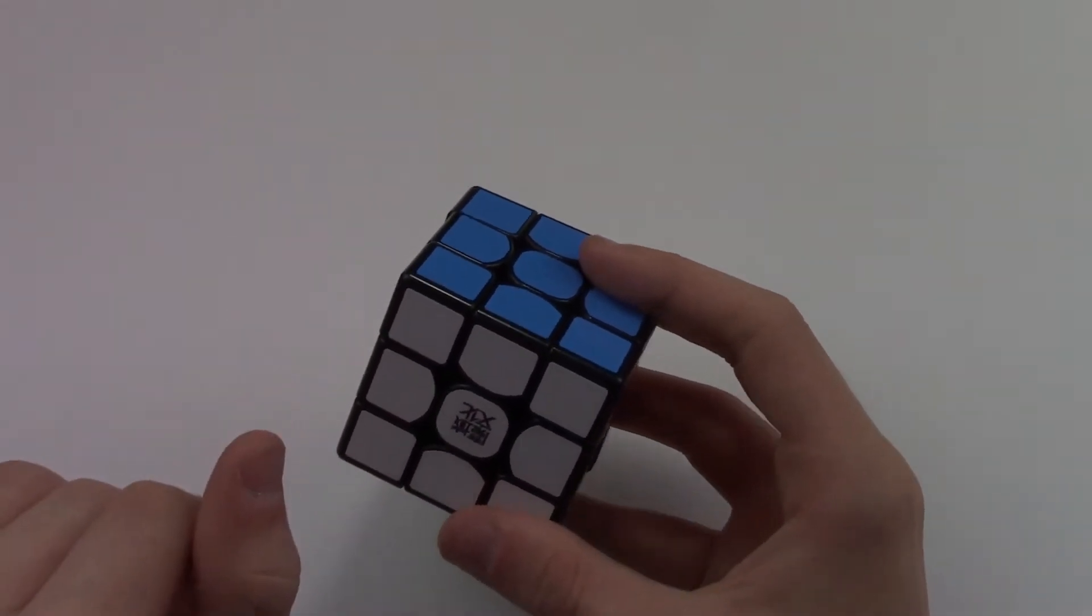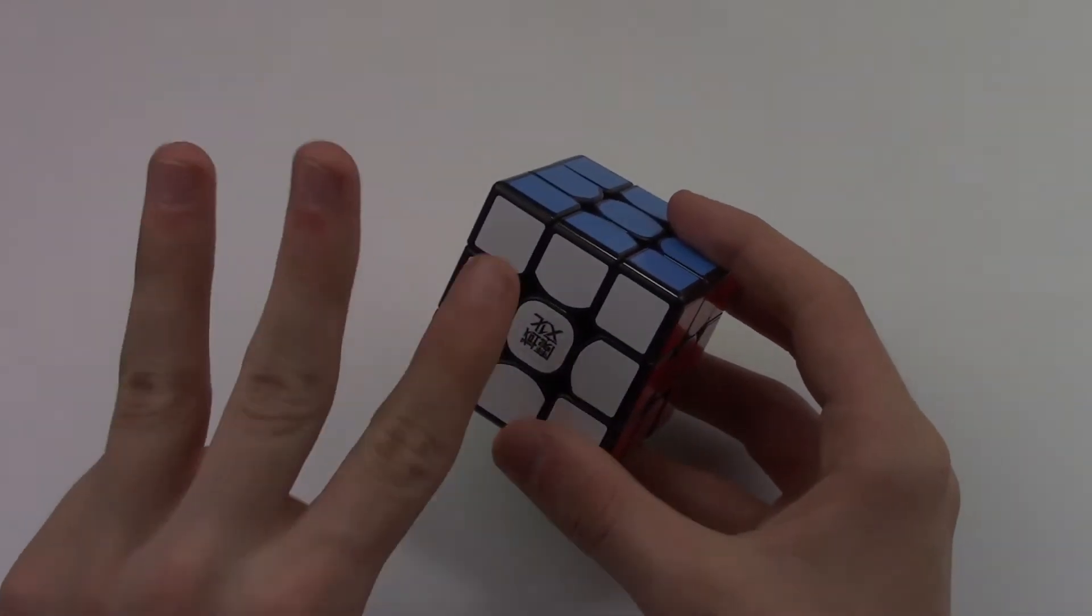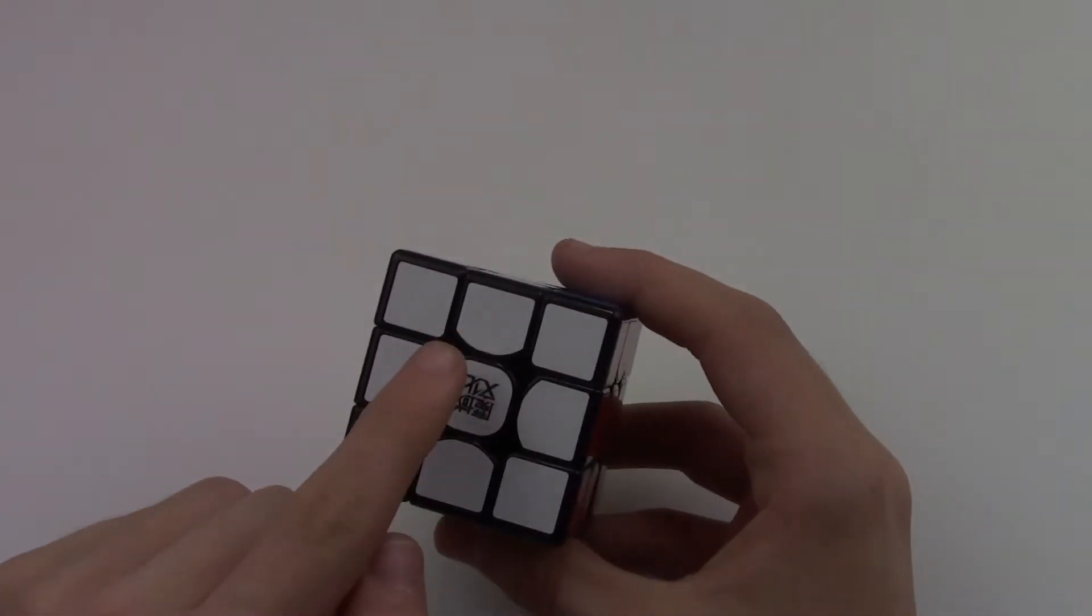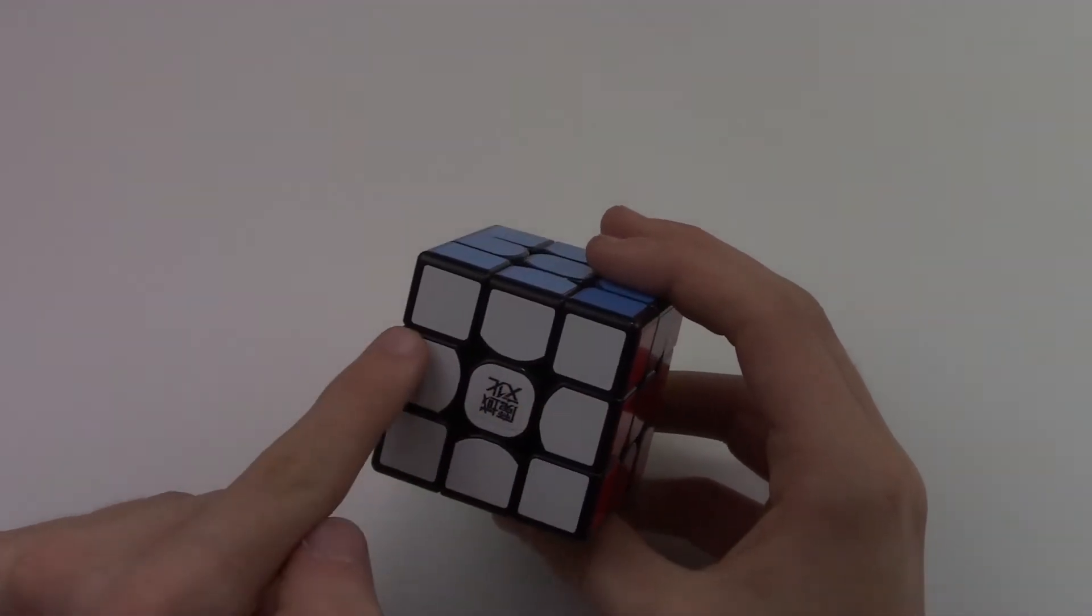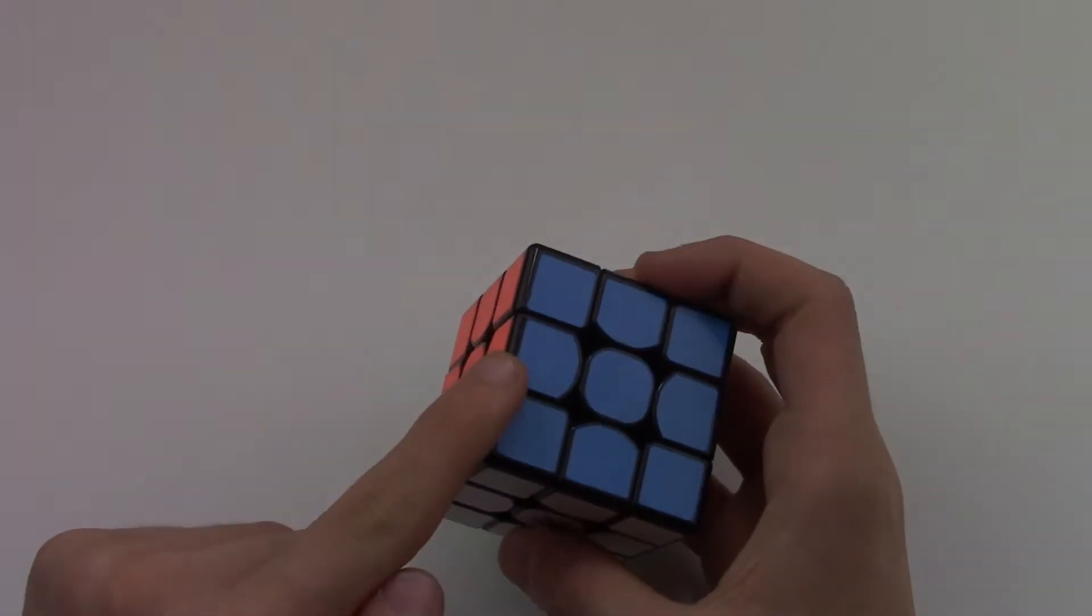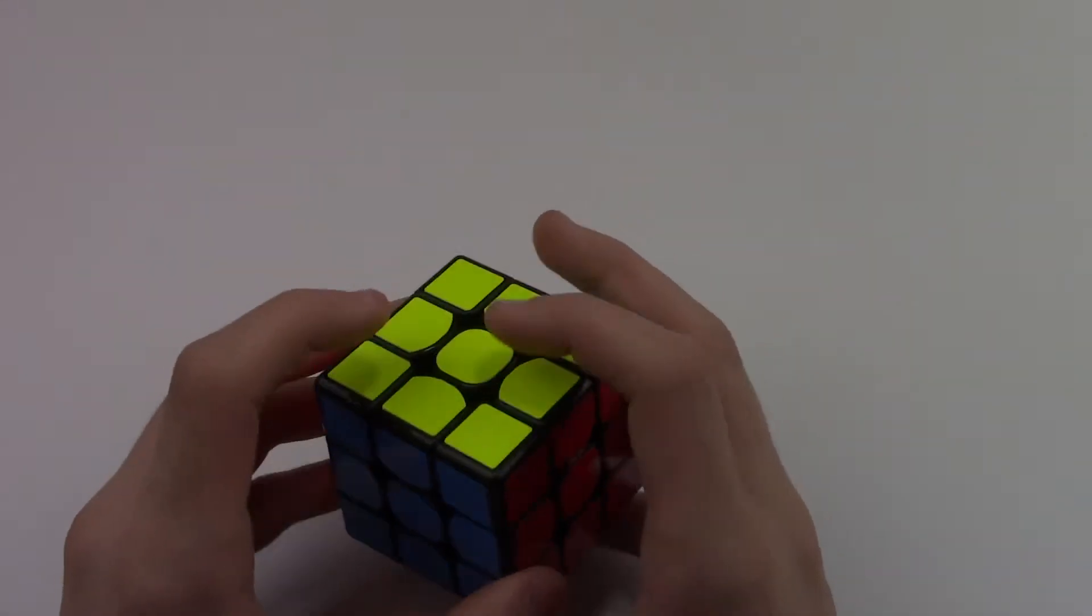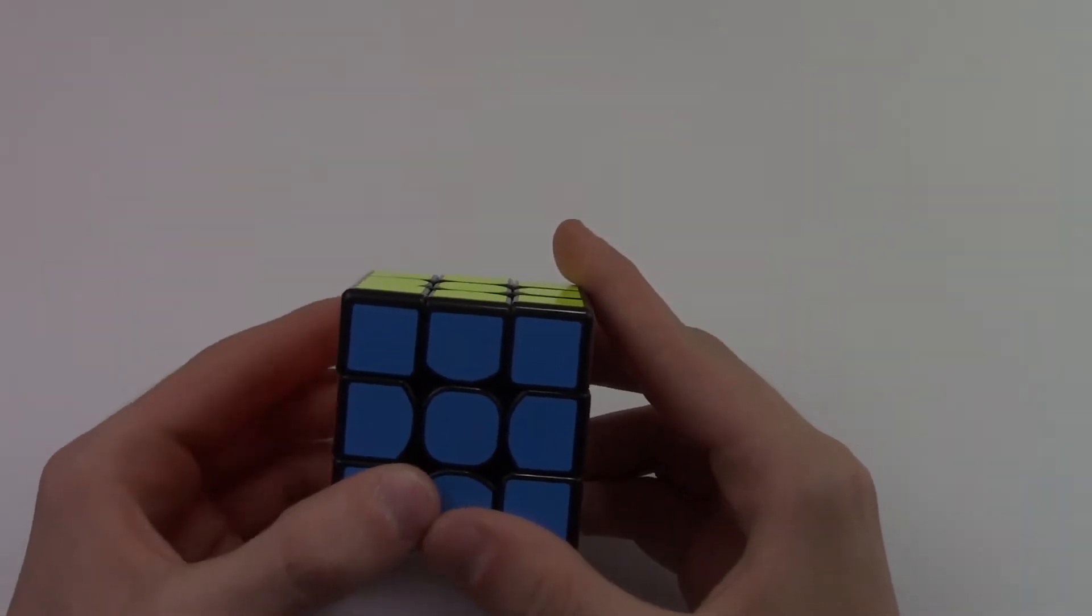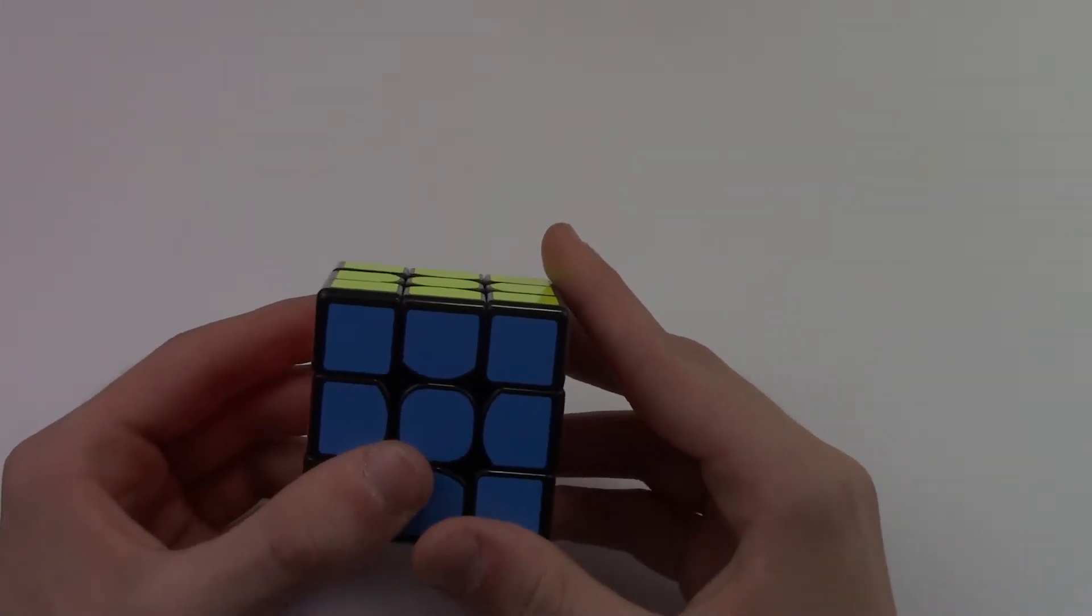Now before we get started, I'm going to do this video in three different steps. No, actually four different steps. I'm going to do how to get the cross quickly, your F2L pairs, OLL, and PLL. So that's what I'm going to do, so stay tuned for all the four parts, but today you're watching part one.